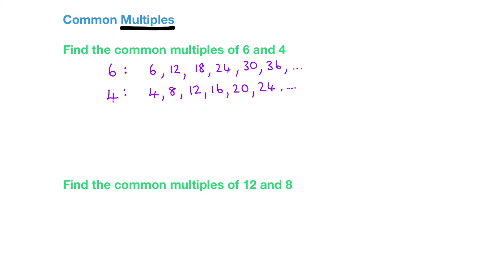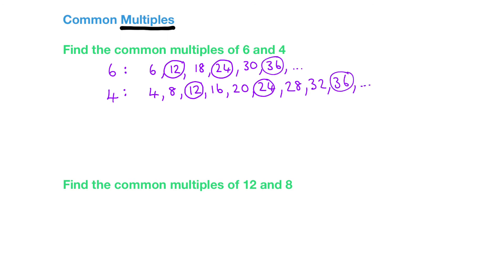The common multiples of six and four are the numbers that appear in both lists. Looking at both, we can see that twelve is in both lists and twenty-four is in both lists. If I kept going with the multiples of four: 28, 32, 36 - so 36 would be the next common multiple. The common multiples of six and four are twelve, twenty-four, thirty-six, and what do you think the next one would be? It would be forty-eight.